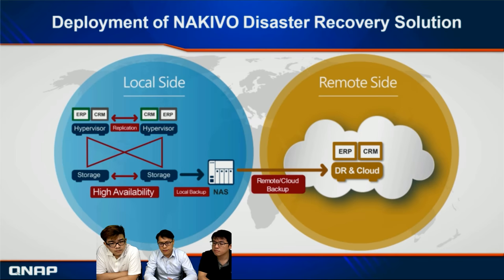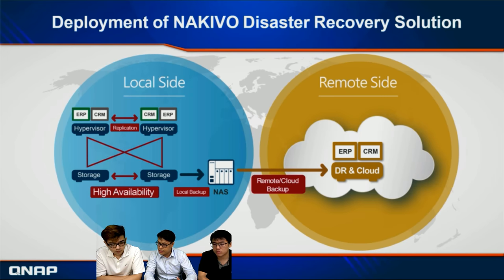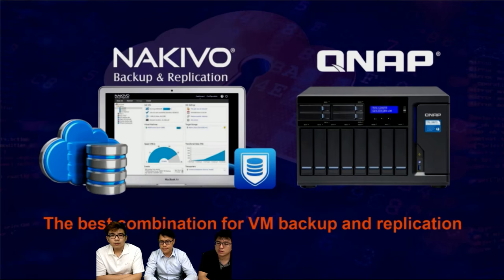This diagram shows the practical disaster recovery solution. From the local side, you build high availability through Nakivo's replication function, and also do local backup of all virtual machines to your QNAP NAS. You can also filter data to a remote site or cloud.